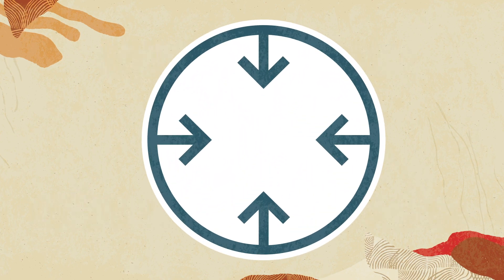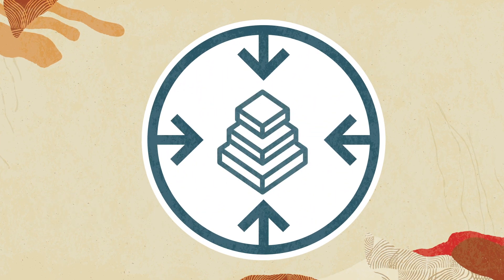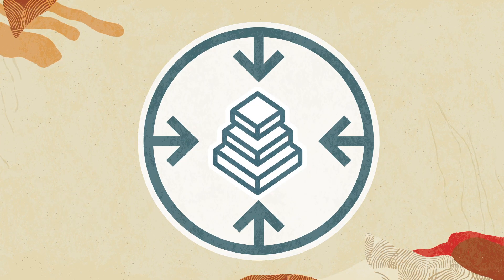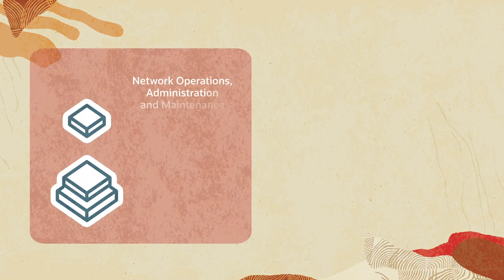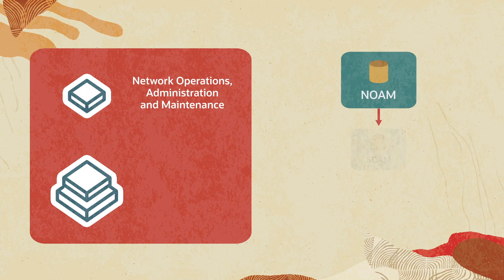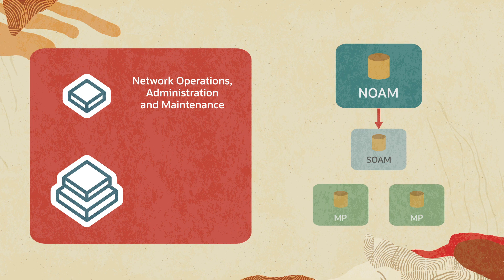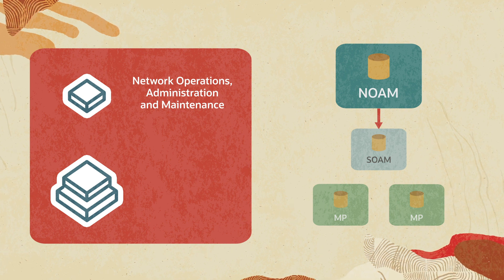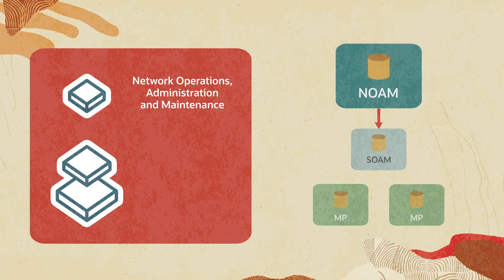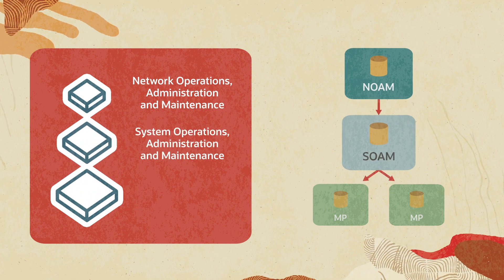DSR has a three-tiered topology layer. The first layer, Network Operations, Administration, and Maintenance — NOAM — configures and manages security, topology, servers, and the IP network.